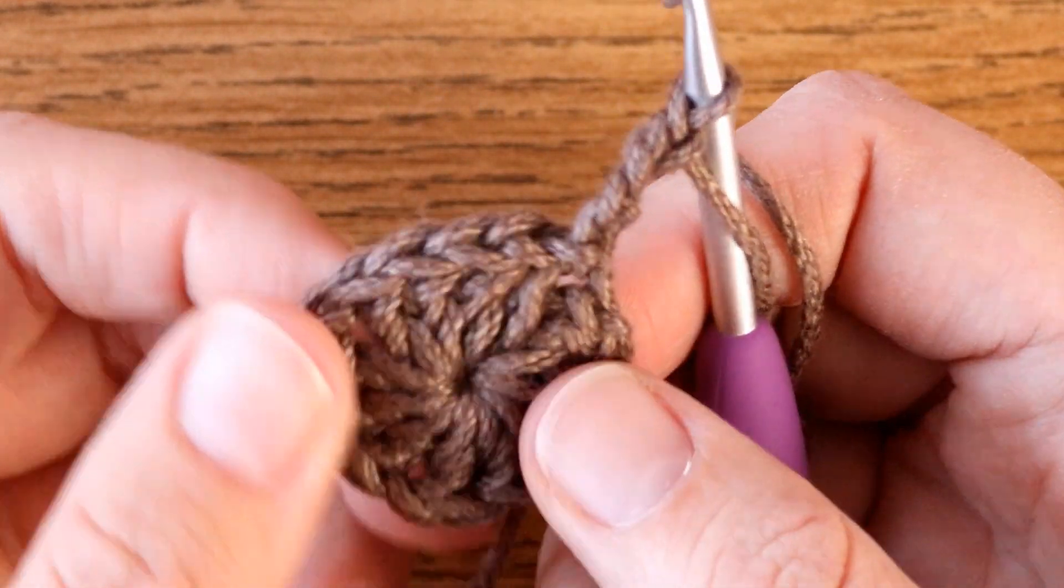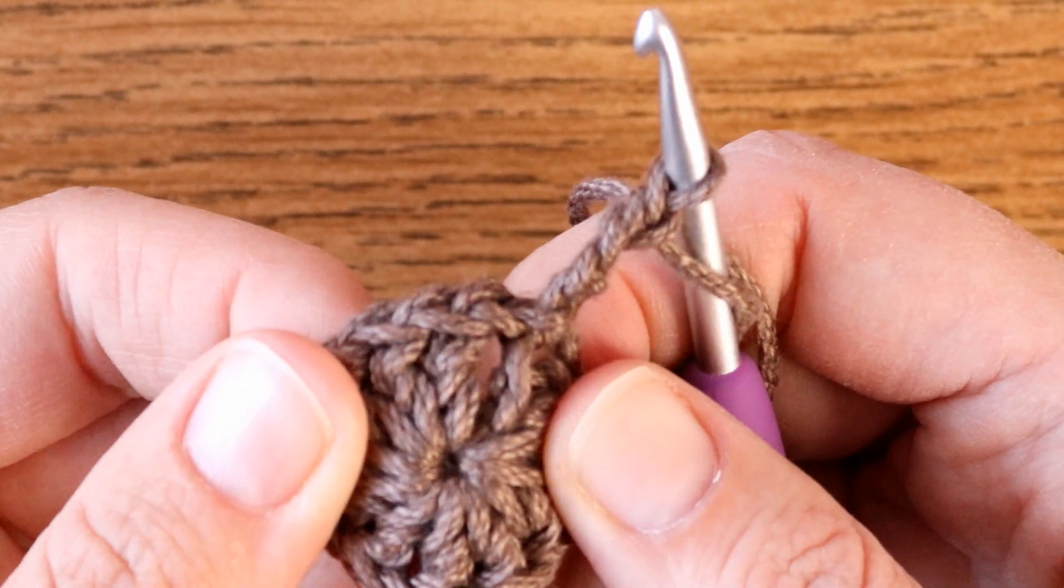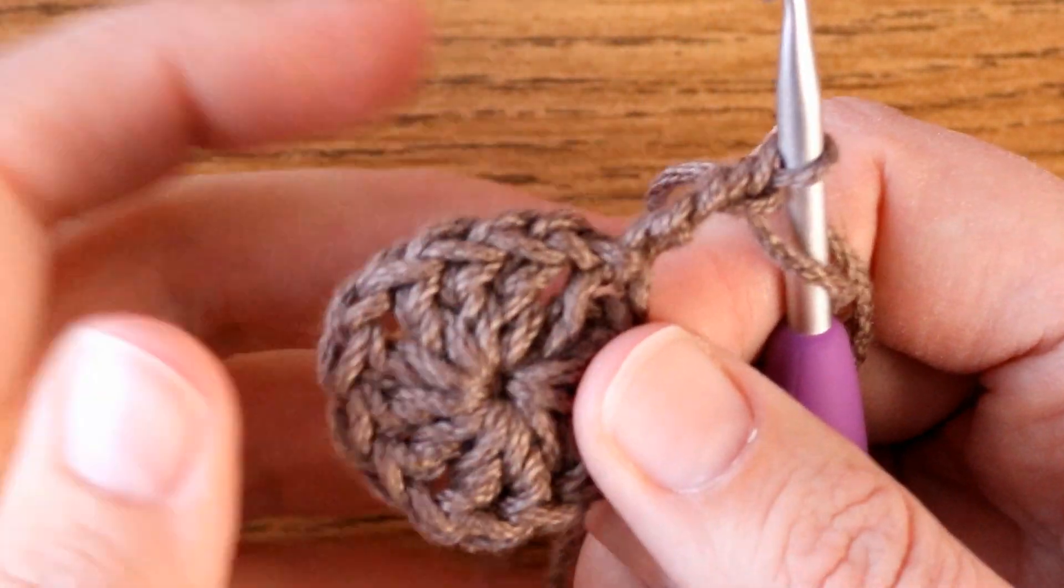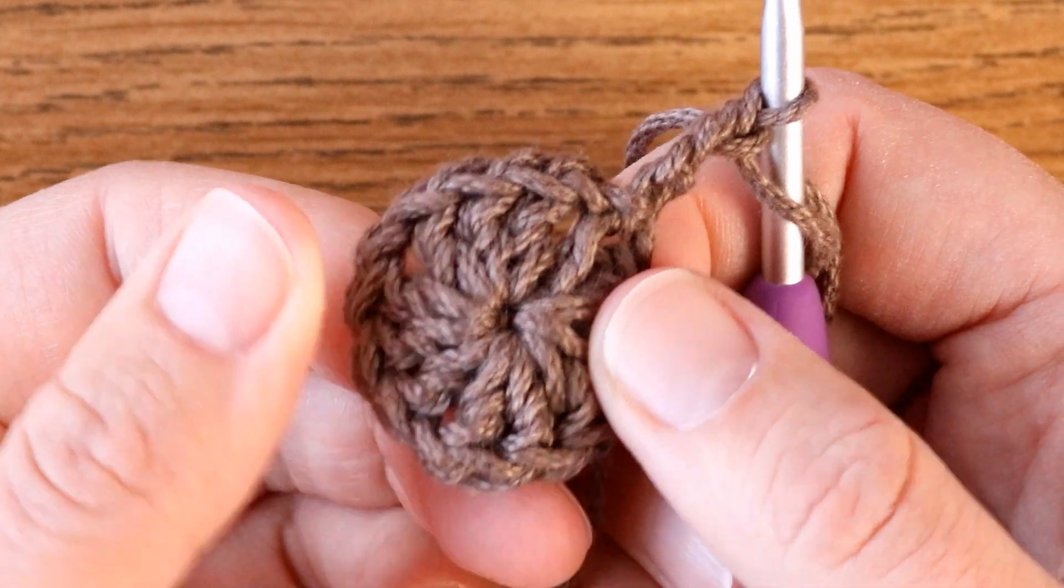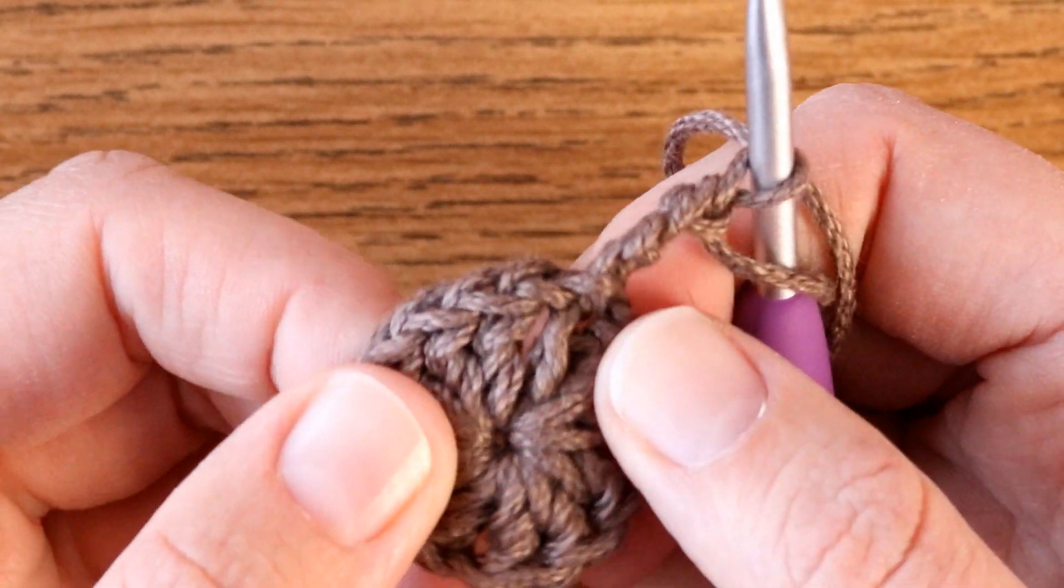This is what we end up with: one nice little circular pattern starting off with no big gap in the middle, same as you would have got if you've been using chains. The magic loop just gives you a much neater finish.